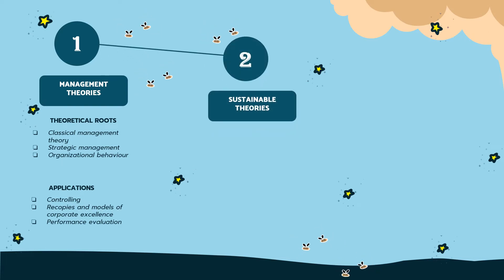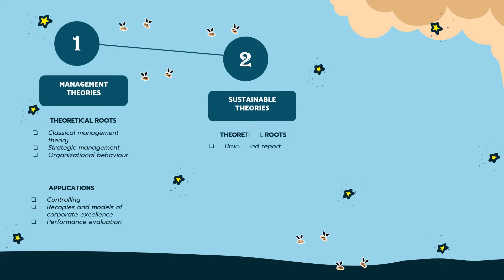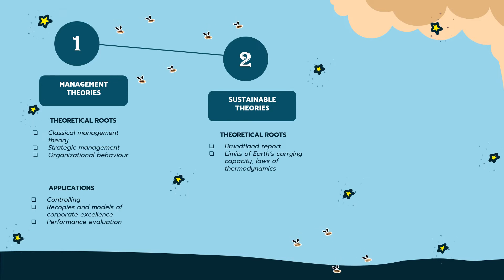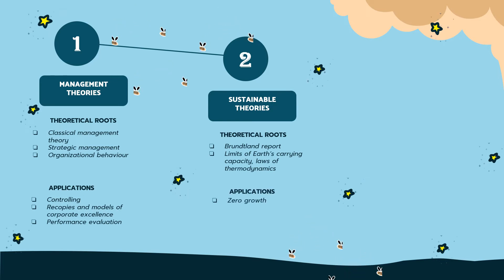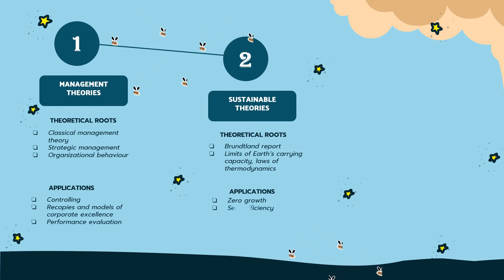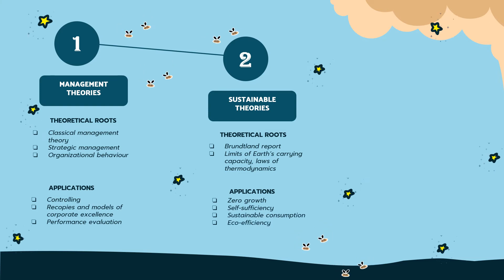Sustainability theory. The second element in the theoretical background is sustainability theory. The theoretical roots in sustainability theory consist of Brundtland's report, Limits of Earth's Carrying Capacity, and Laws of Thermodynamics. Furthermore, applications for sustainability theory and EPE are zero growth, self-sufficiency, sustainable consumption, and eco-efficiency.